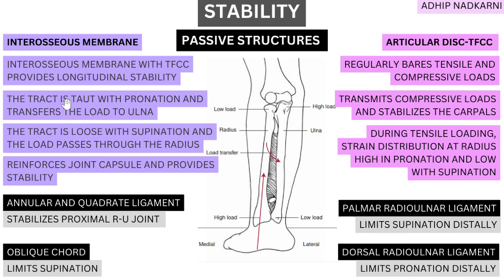Now let's move on to the other structures which create stability at the radio-ulnar joint. Starting with the interosseous membrane, the interosseous membrane along with your articular disc — the TFCC — provides longitudinal stability. Transverse stability is mostly provided by your ligaments and muscles, but longitudinal stability is definitely provided by the interosseous membrane and the articular disc.